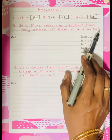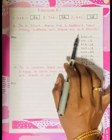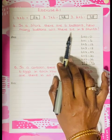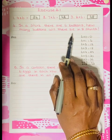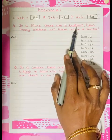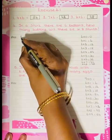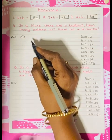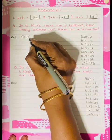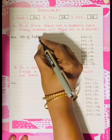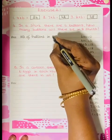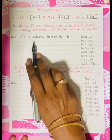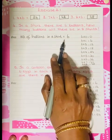8 shirts. N.O. dot means number, you know phone number, mobile number. N.O. means number. So number of buttons in a shirt is equal to 6. So in a shirt there are 6 buttons.